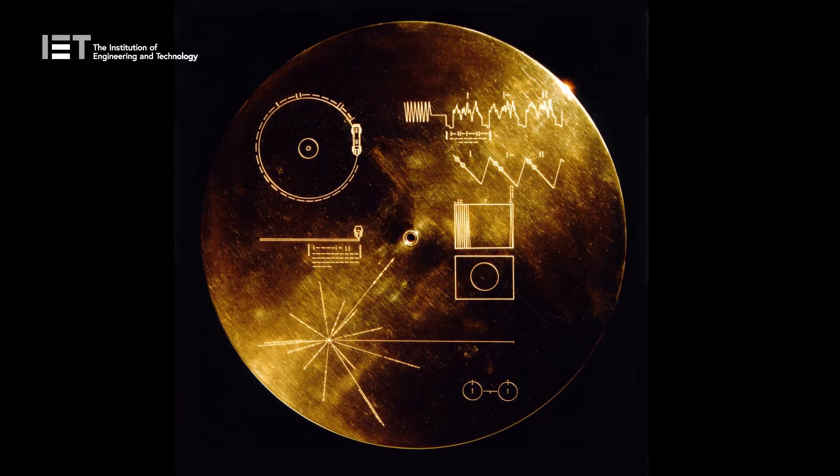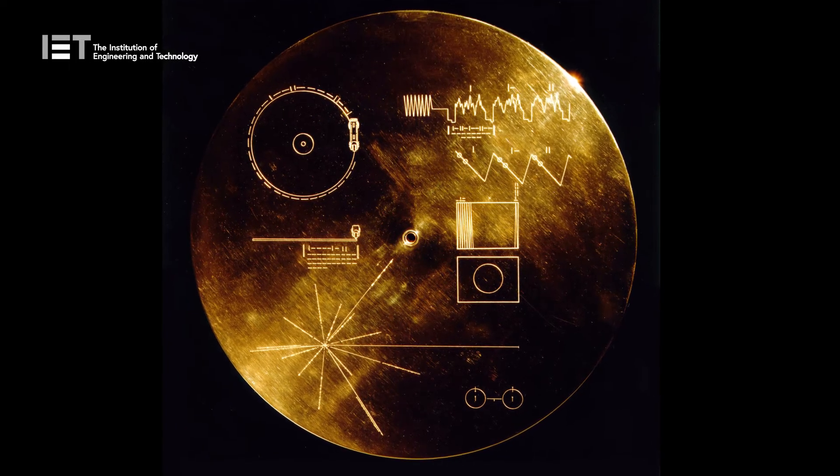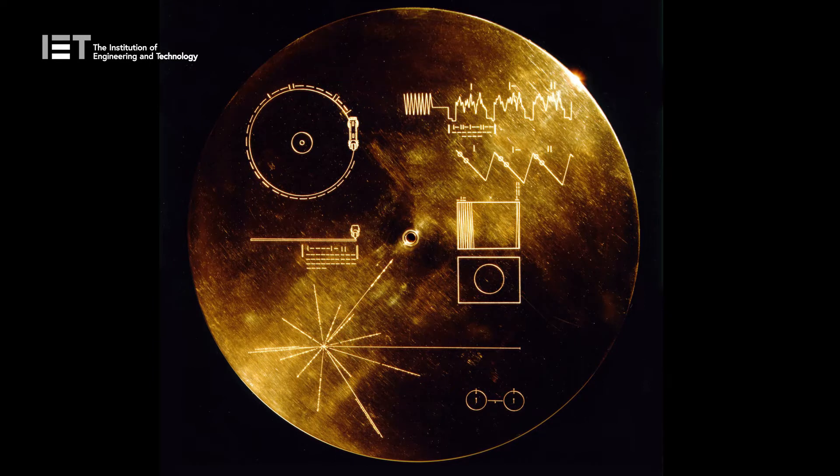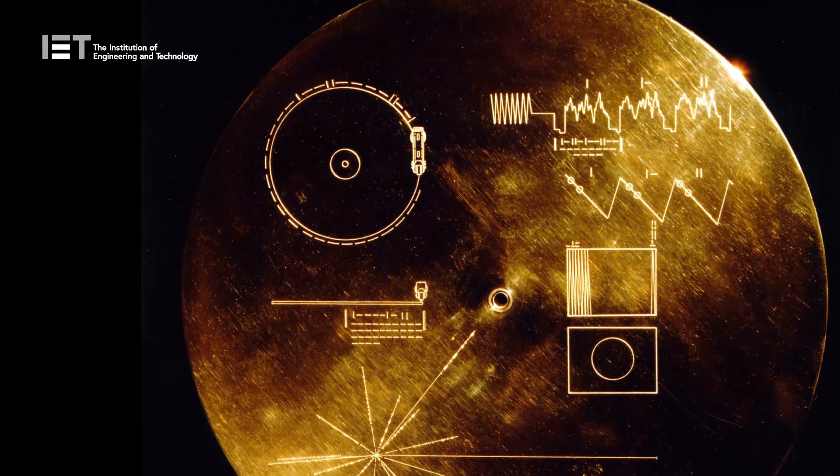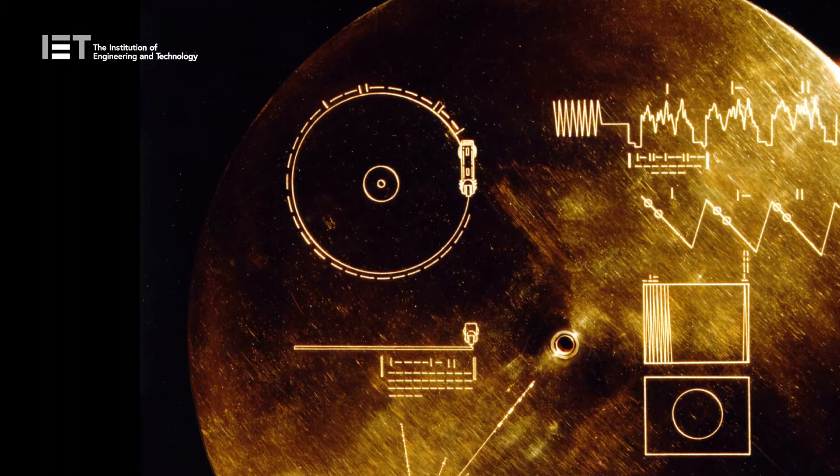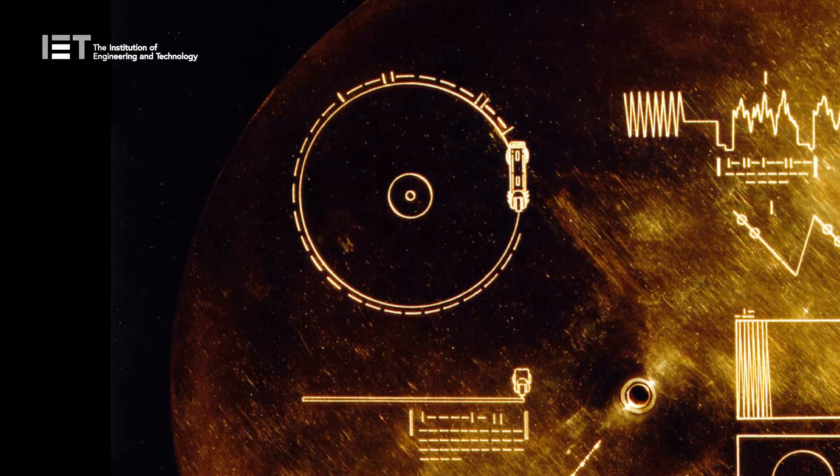On the cover, several signs have been engraved in the hopes a potential recipient would be able to decipher how to play the record. The first image in the top left shows how to play the record. It shows how a stylus would need to be placed on a record to play it, and the Voyager probe contains one attached to them.